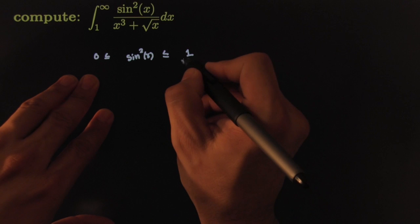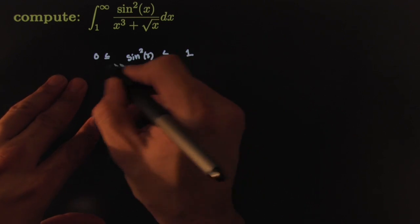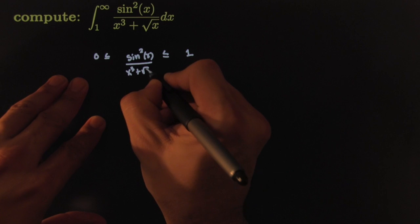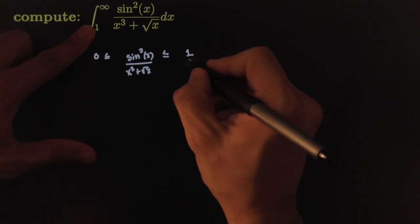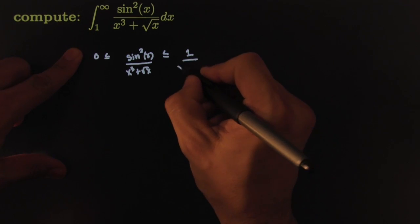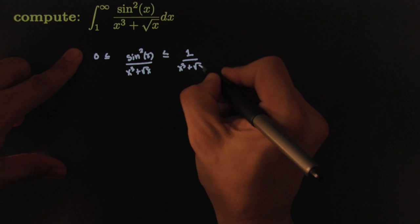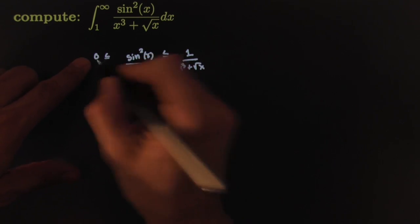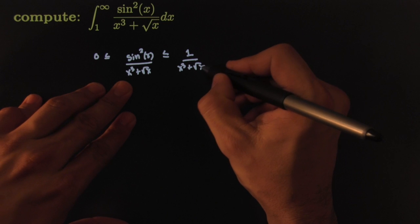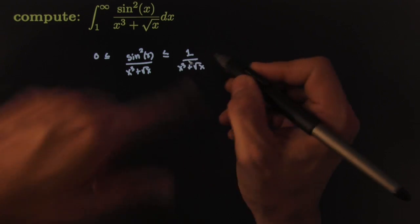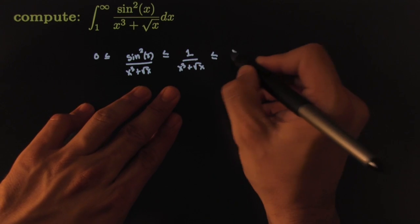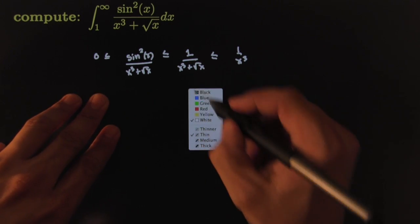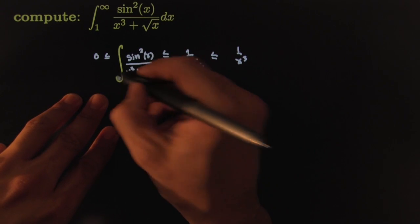Furthermore, if I divide everything by x cubed plus the square root of x, where my x's are positive, that wouldn't change the inequality. I could divide x cubed plus the square root of x by the same thing, but it doesn't matter because it's zero in the numerator anyway. Furthermore, based on the previous example, I know I can control this by 1 over x cubed.